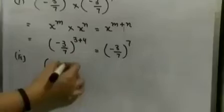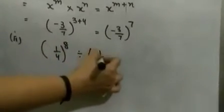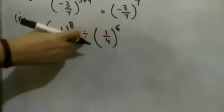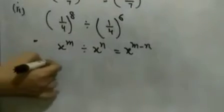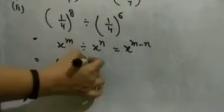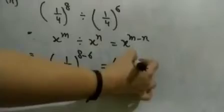1 by 4 raised to power 8 divided by 1 by 4 raised to power 6. Again, the bases are same. The division sign is between, so we will go for the second law of exponent: x raised to power m divided by x raised to power n is equal to x raised to power m minus n. So the answer is 1 by 4 raised to power 8 minus 6, which is 1 by 4 raised to power 2.